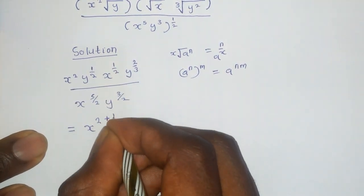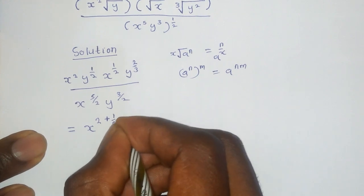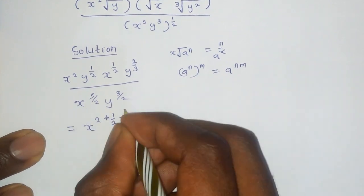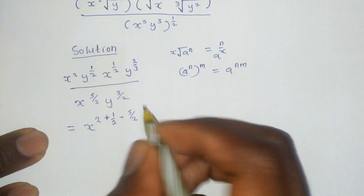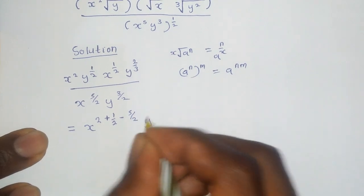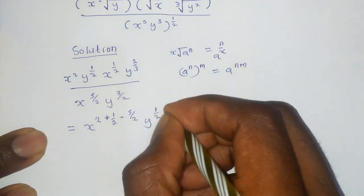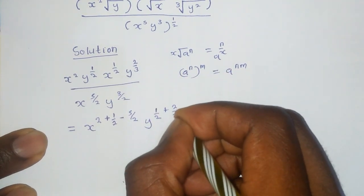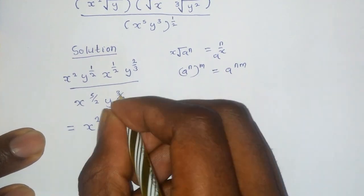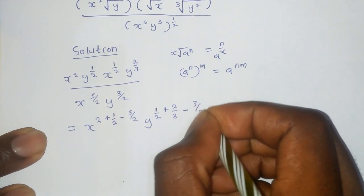We are collecting the like terms. Subtract 5 divided by 2 and y raised to a half plus 2 divided by 3. Subtract 3 divided by 2.